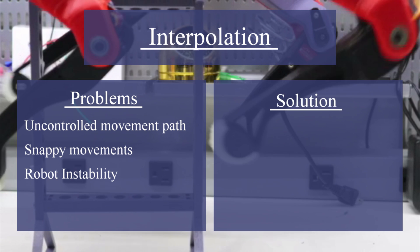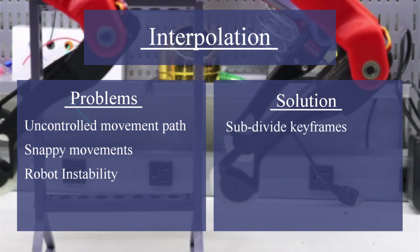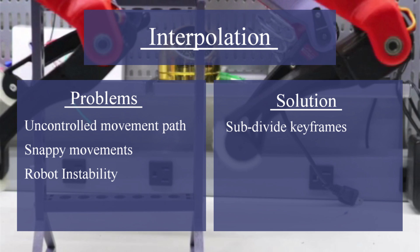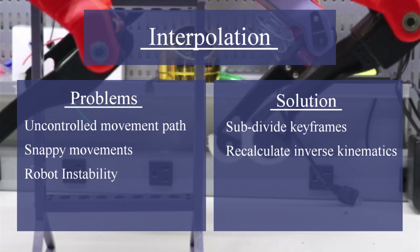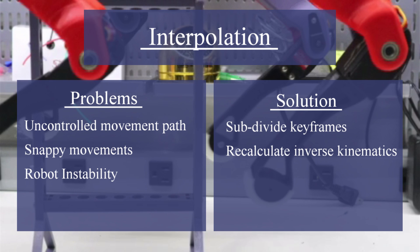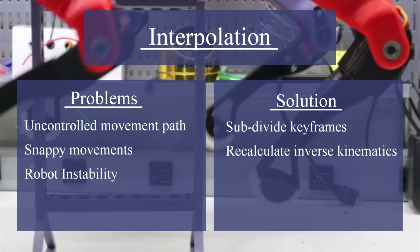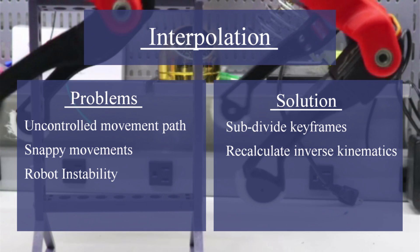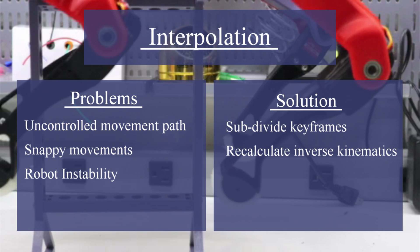We can solve this with interpolation by subdividing the keyframes into smaller segments and then recalculating the inverse kinematics for each segment. We can gain more control over the servos by increasing the number of segments. This will generate a smooth and controlled movement between keyframes.